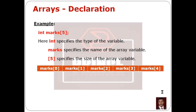int specifies the type of the array variable. This array type is int. Marks is the name of the array variable. 5 specifies the size of the array variable — we can store 5 elements. int is the integer data type, and we have a variable called marks.